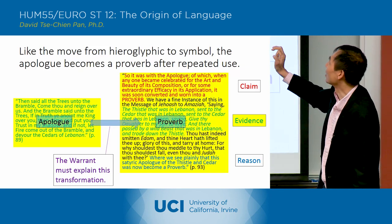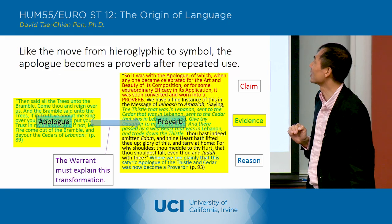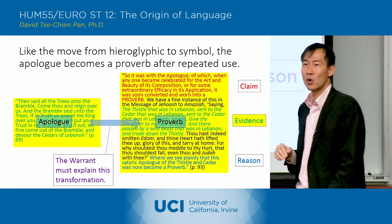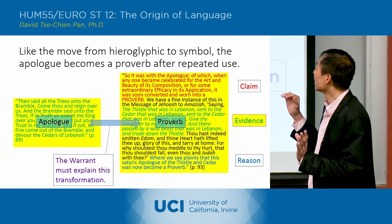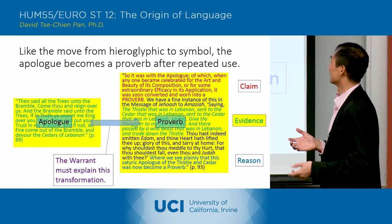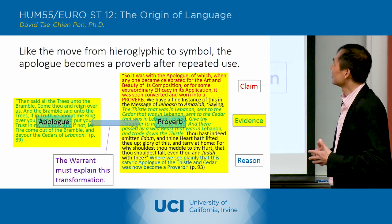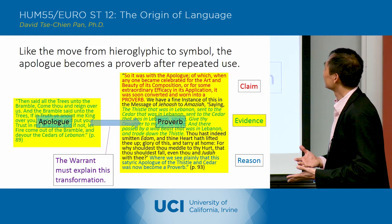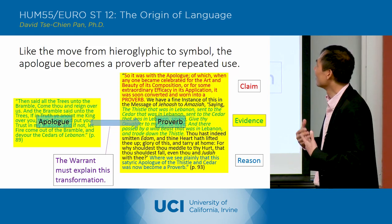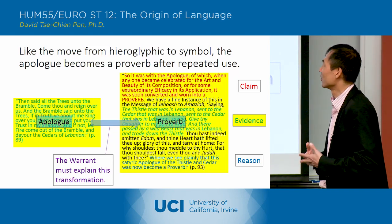It was with the epilogue: when anyone became celebrated for the art and beauty of its composition, or for some extraordinary efficacy in its application, it was soon converted and worn into a proverb. We have a fine instance of this in the message of Jehoash to Amaziah, saying: 'The thistle that was in Lebanon sent to the cedar that was in Lebanon, saying, give thy daughter to my son to wife. And there passed by a wild beast that was in Lebanon and trod down the thistle.'